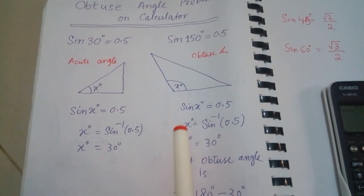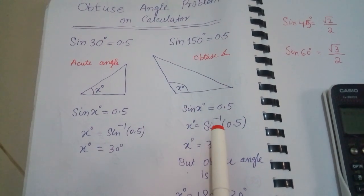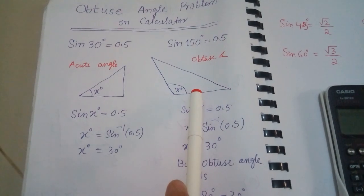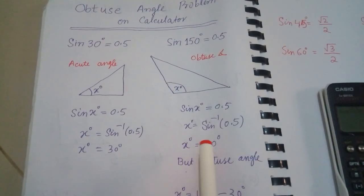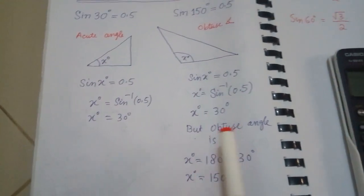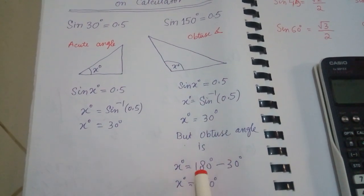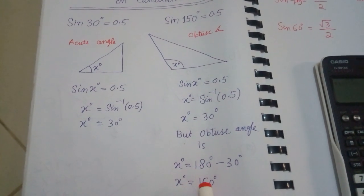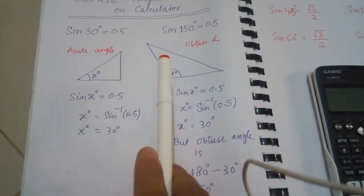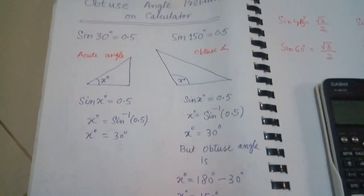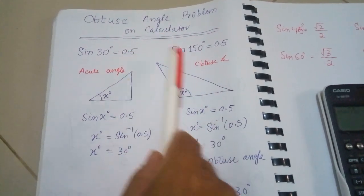So what should we do here? When you are using sine inverse and the triangle is an obtuse angle triangle, take the answer from the calculator — in this case 30 degrees — and always subtract it from 180. You get 150 degrees. So the angle in the obtuse angle triangle is 150 degrees. This is how we solve the obtuse angle problem on a calculator.